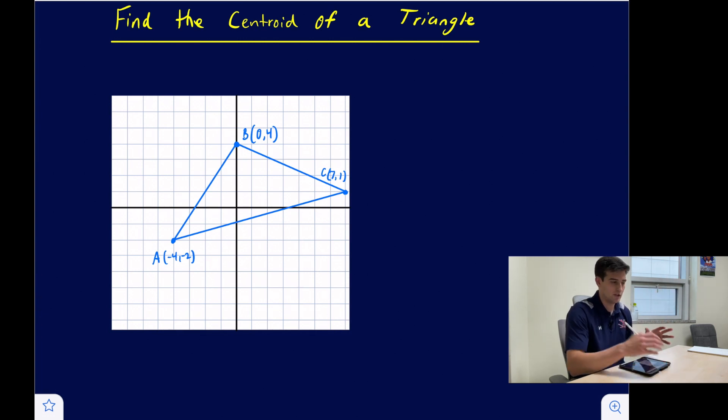If we can find a vertex to the side that gives us either a horizontal or a vertical segment, then it's going to be very easy to find the distance where the centroid would be located along that line because it's two-thirds of the way.